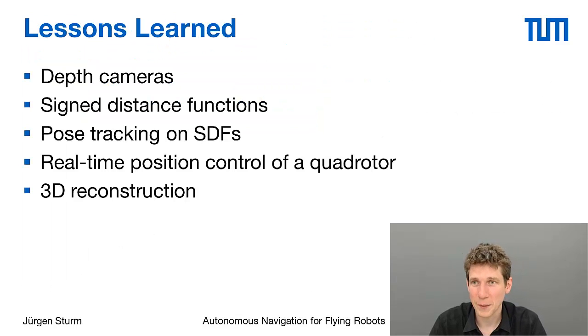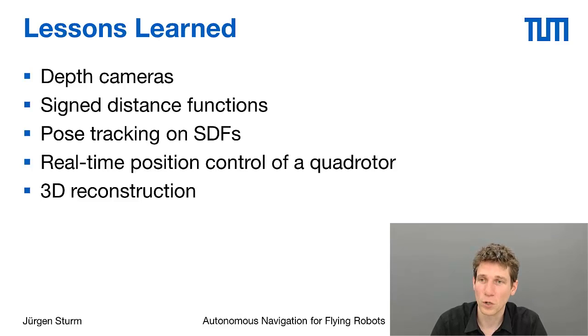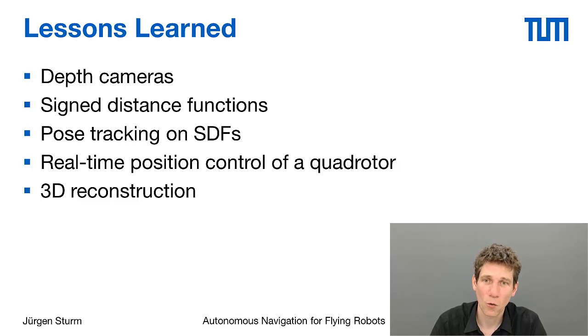To sum this up: today we have looked at depth cameras in combination with quadrotors, introduced signed distance functions as very powerful representations for 3D space when dealing with depth cameras, looked at methods to track the camera pose with respect to a signed distance function, and shown how we can use that for position control of the quadrotor. As a side product, in combination with Marching Cubes, we get a mesh that we can post-process by loading it into a CAD program to take measurements of a building, or use it for person scanning and 3D printing.